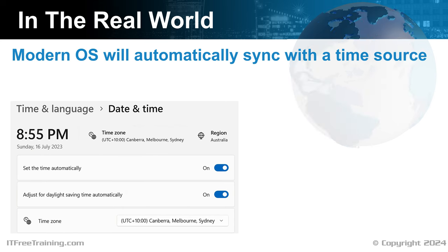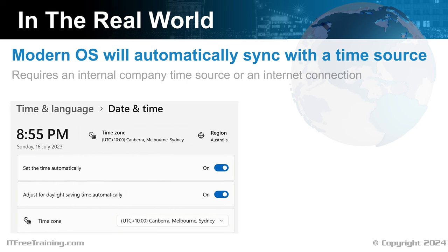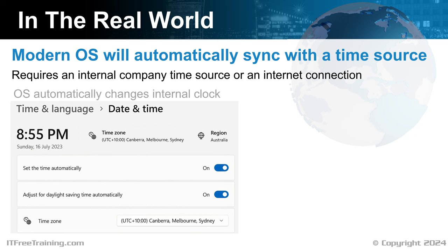In the real world, modern operating systems will automatically sync the date and time from a time source. This requires an external time source or an internal company time source. When you change the time in the operating system, it automatically changes the internal clock accordingly. In a lot of cases, the process happens automatically and you won't know what is happening — you could even have a computer with a dead internal battery, but since the computer automatically re-syncs on startup, you may not even notice.